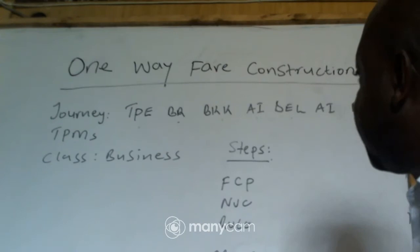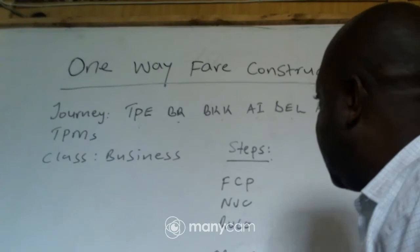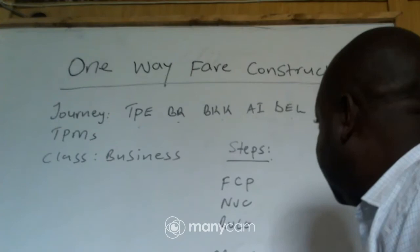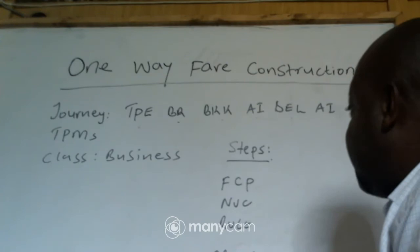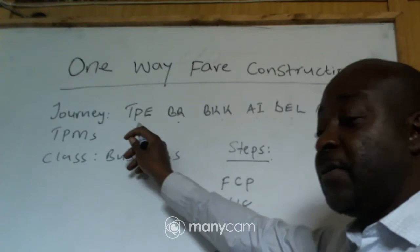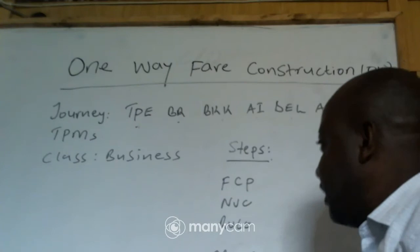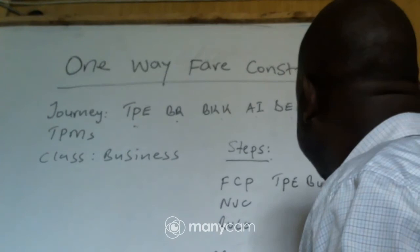If we are told to calculate the fare, we are given steps which I want us to look at — and those are the steps we shall be applying throughout the course. The first step is known as FCP. FCP in full means Fare Construction Point. So going back to the journey, our origin is Taipei and our destination is Mumbai, so our Fare Construction Point will be Taipei to Mumbai.